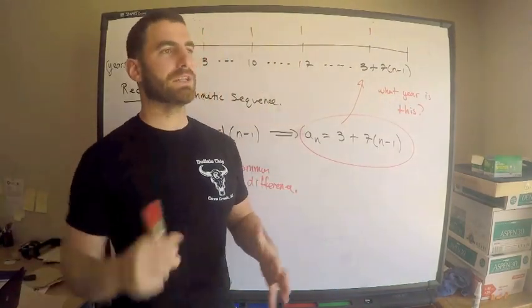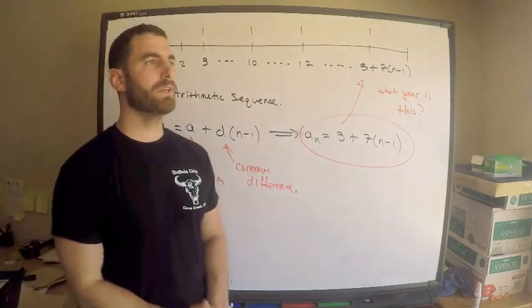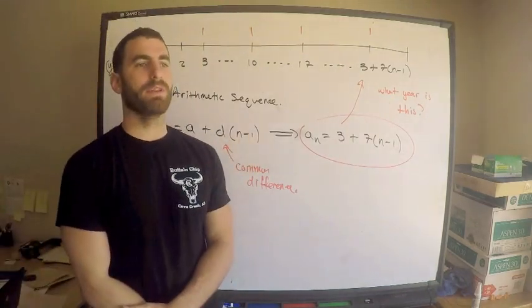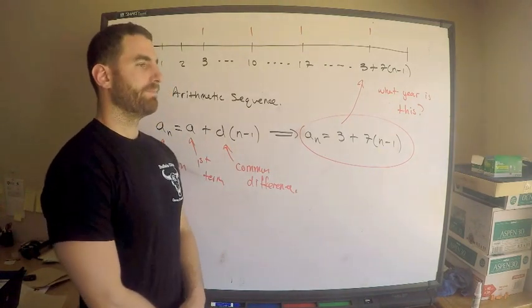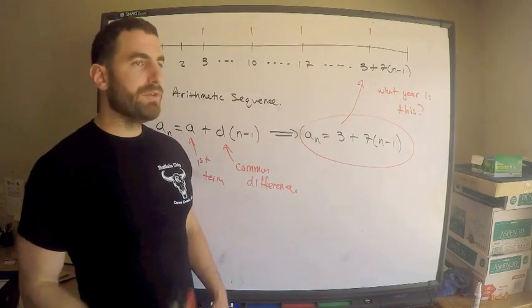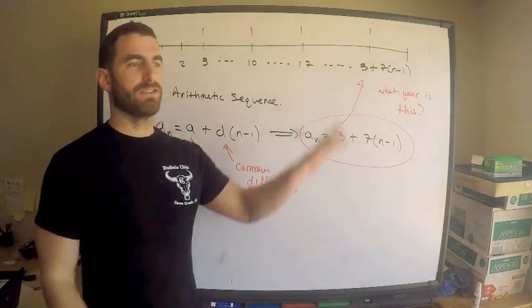The nth term is three plus seven times n minus one. From here you're pretty much good to go. Now these types of questions, they are relatively unusual. We want to find basically a closed form formula for the present value of these payments, these cash flows.